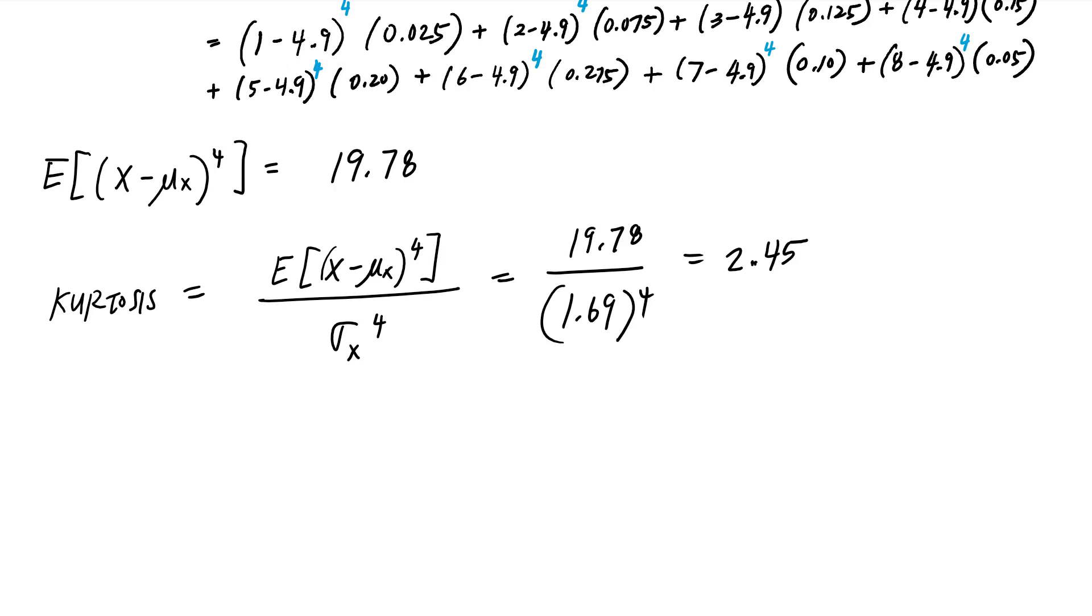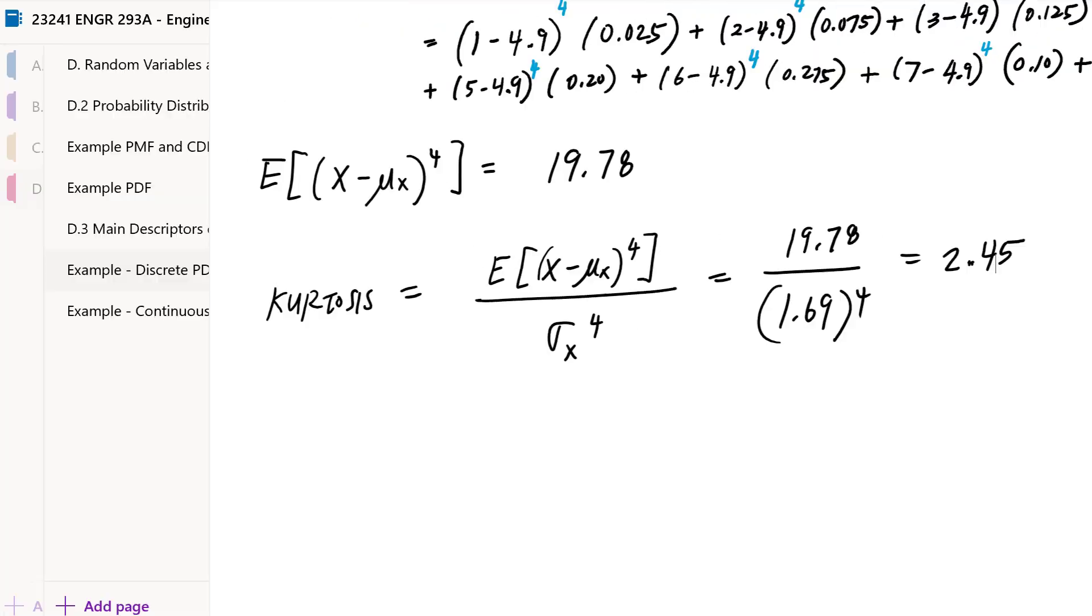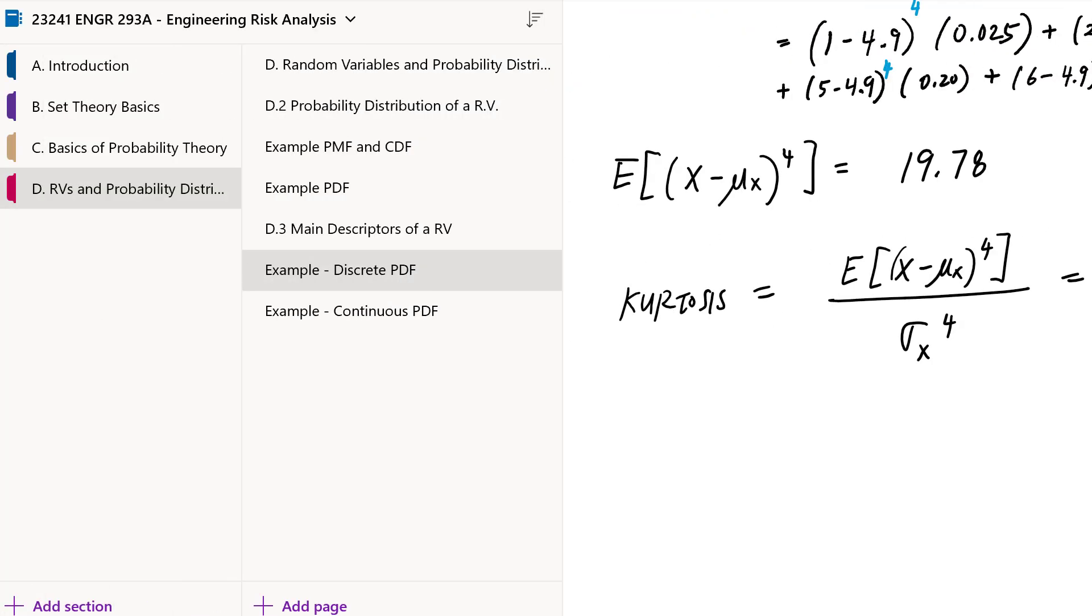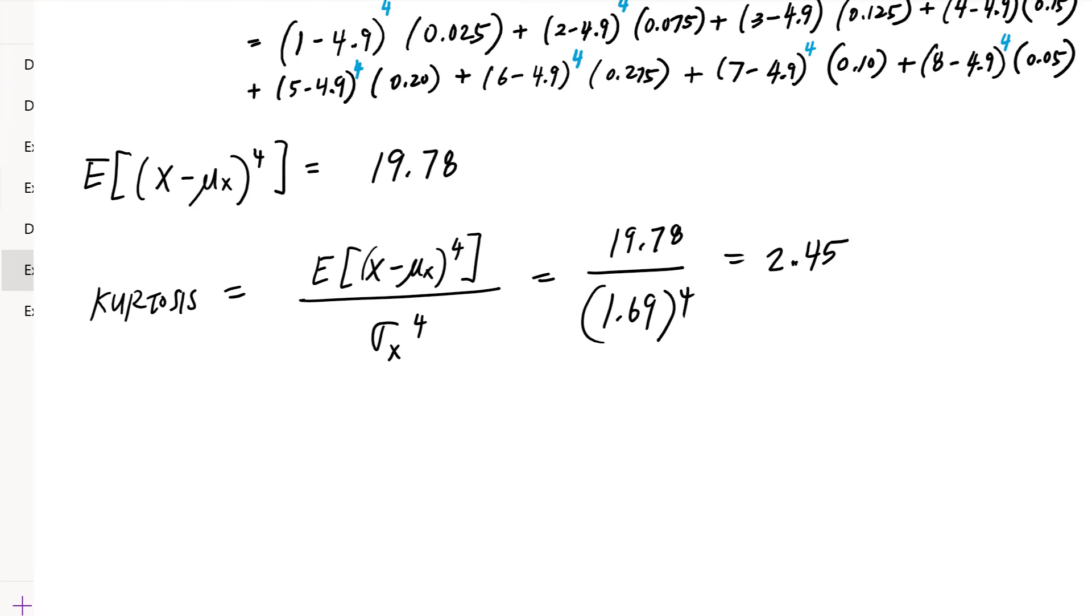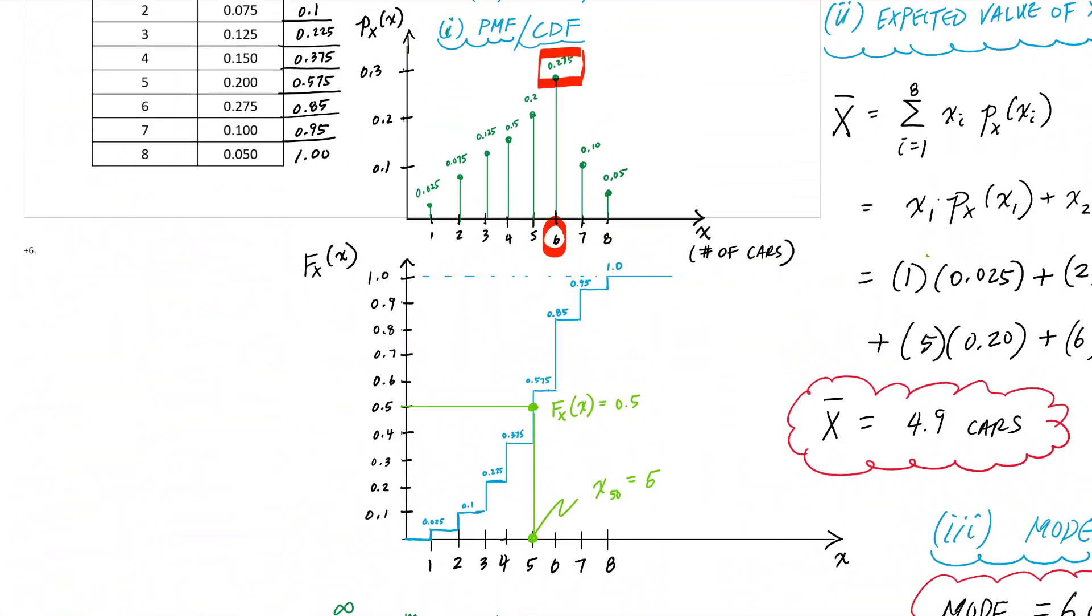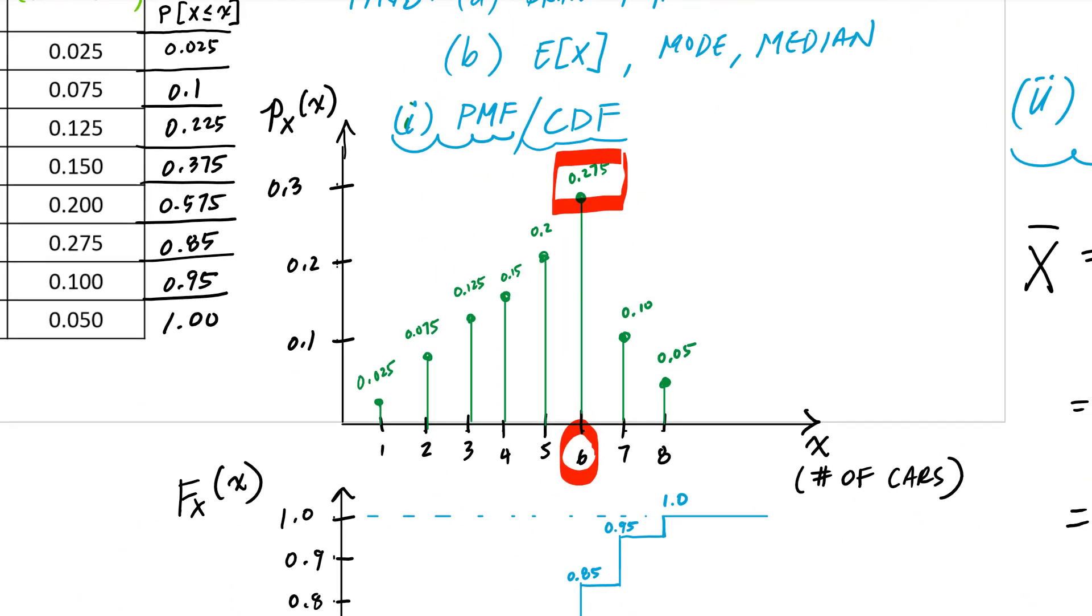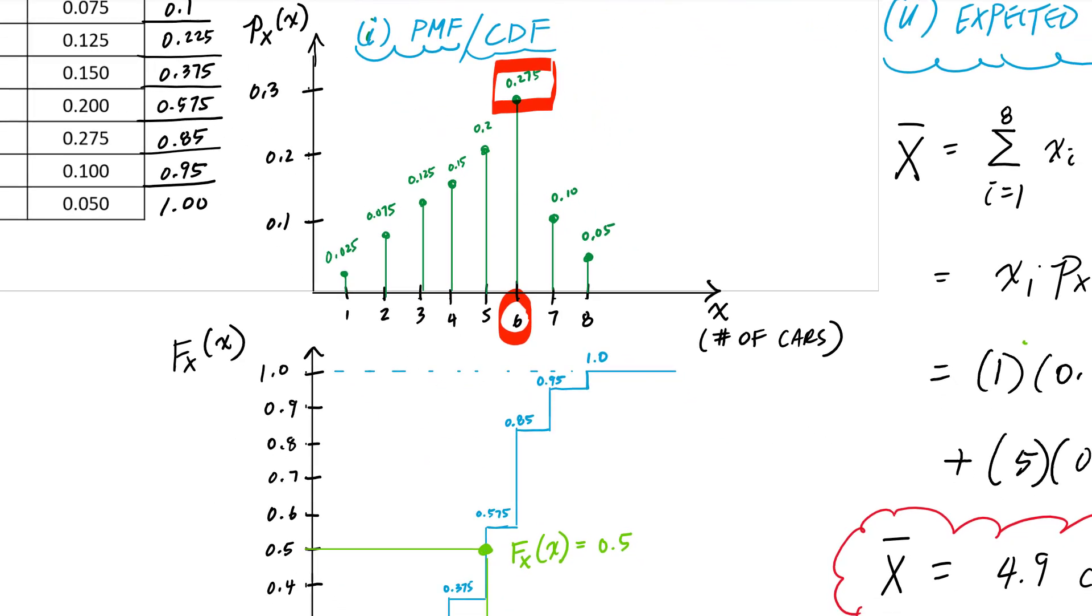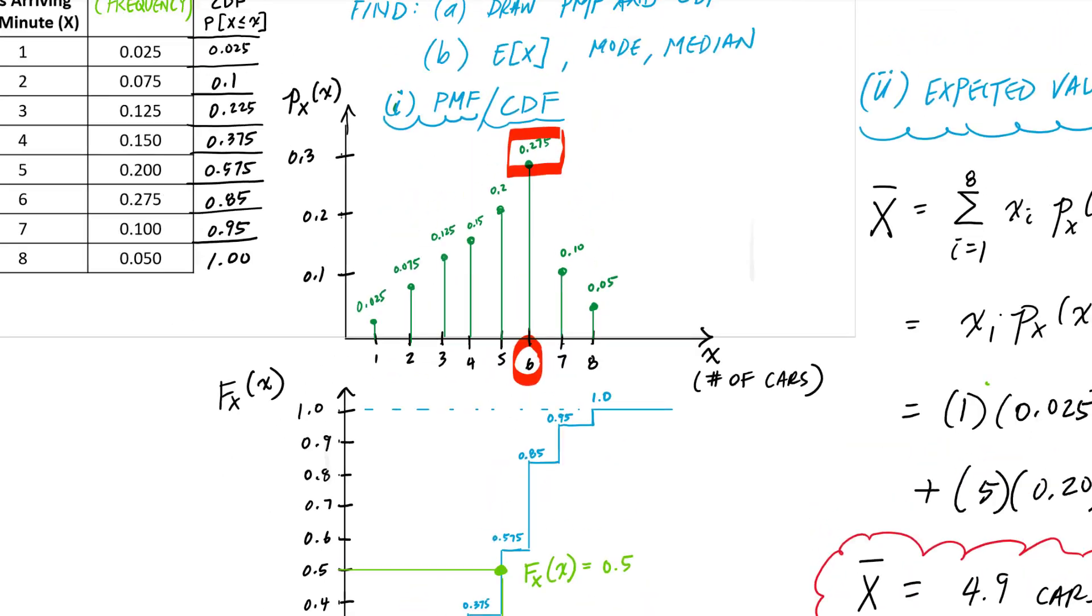And that positive number means it's maybe more peaked or pointier than something else. Some other distributions would be a relative measure. If we go back and look at the PMF associated with this variable, then we might be able to say it's got kind of a peak to it. It's peaky. It has at 6 cars a really high value around 5 and 6. So it's kind of peaky. But this would be a relative measure to describe the shape of this PMF.